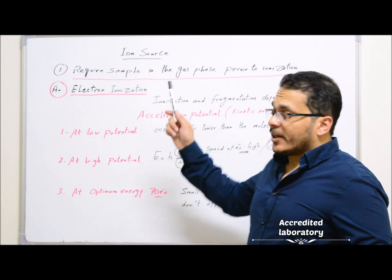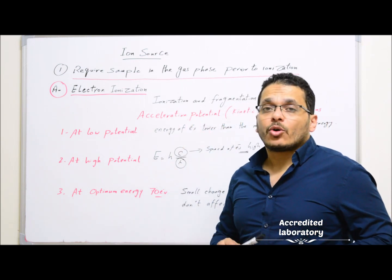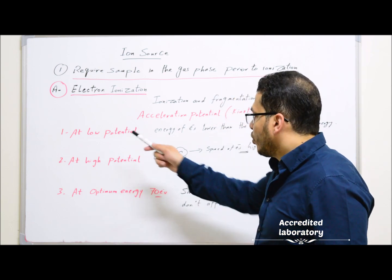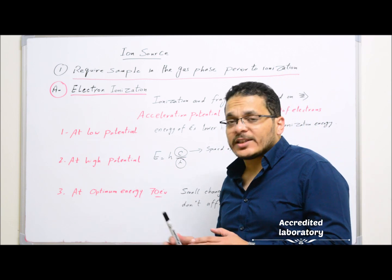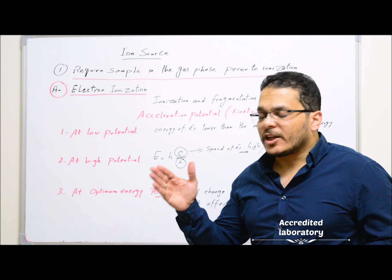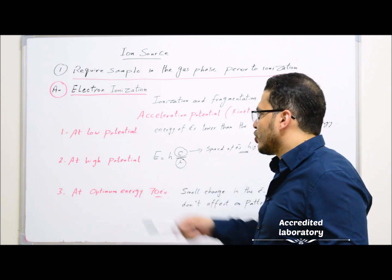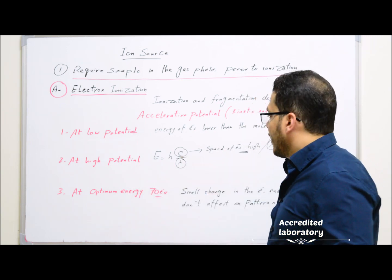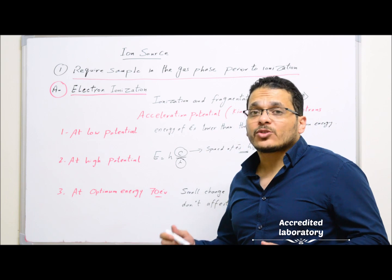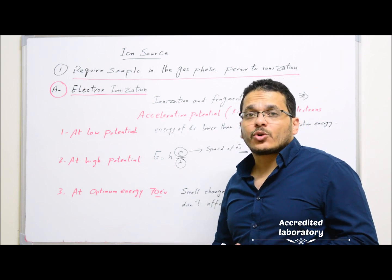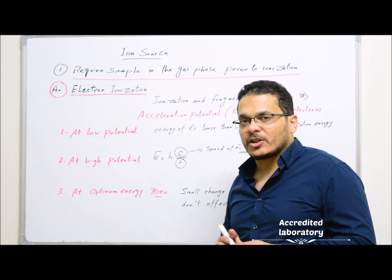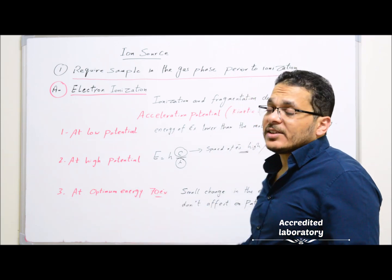Ionization and fragmentation in electron ionization depend on the acceleration potential or kinetic energy of the electrons. At low potential energy, the electron energy will be lower than the molecule's ionization energy and electrons cannot ionize the molecule. At high potential, according to the energy equation E = hc/λ, the speed of electrons will be very fast and wavelengths will be very small, so molecules will be transparent to the electrons and ionization cannot happen.